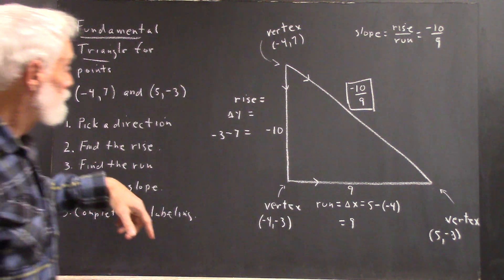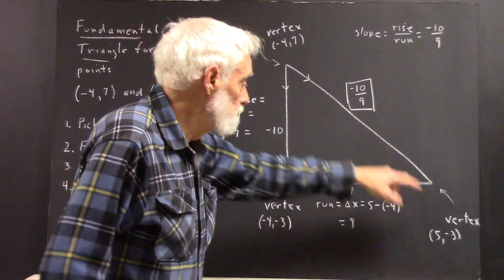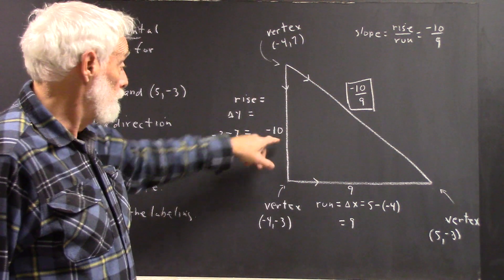Find the rise. Well, the rise goes from here to here. Looking at the numbers, it goes from 7 to negative 3. That's a displacement of negative 10.